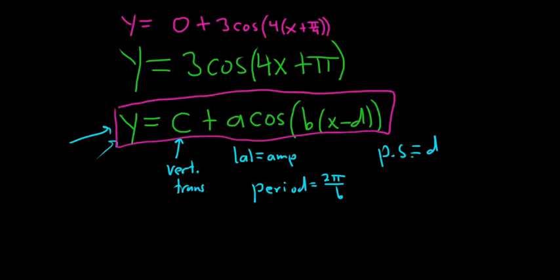So the vertical translation is 0, so I'll put that up here. I'll call it vt just to be cool. Vertical translation is equal to 0. The amplitude is the absolute value of 3, so 3 is just 3. Its absolute value is 3, so the amp is going to be 3. You see the a is 3, so same thing.